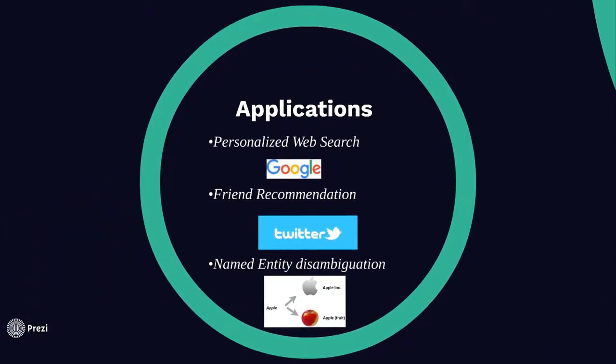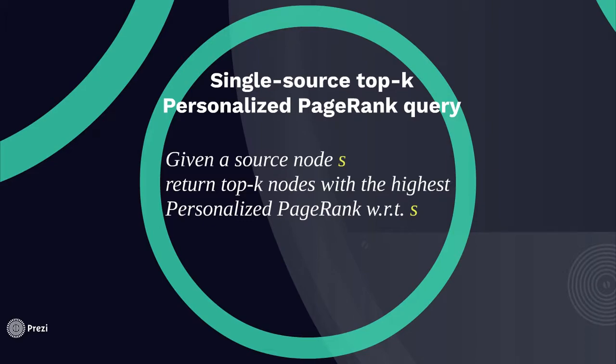There are many applications of personalized PageRank, like web search, friend recommendation, and named entity disambiguation. A particularly useful form in friend recommendation is the single-source top-k personalized PageRank query, where a source node S is given and we want to return the top-k nodes with the highest personalized PageRank with respect to S.